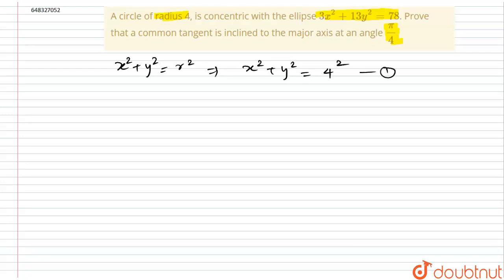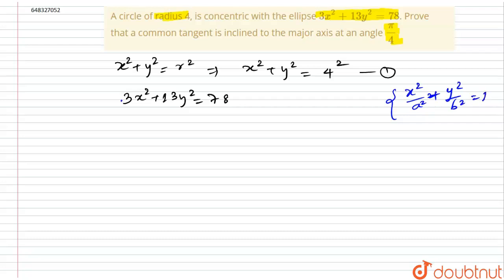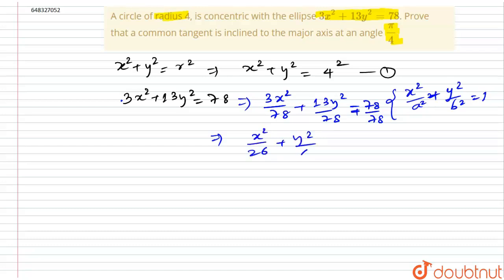The equation of the ellipse given is 3x² + 13y² = 78. The standard equation of an ellipse is x²/a² + y²/b² = 1. Dividing throughout by 78, this becomes x²/26 + y²/6 = 1, which can be written as x²/(√26)² + y²/(√6)² = 1. This is the standard form of the ellipse, with a = √26 and b = √6.